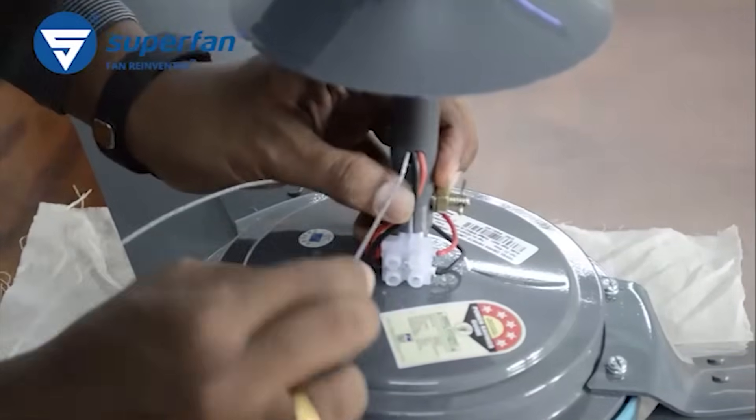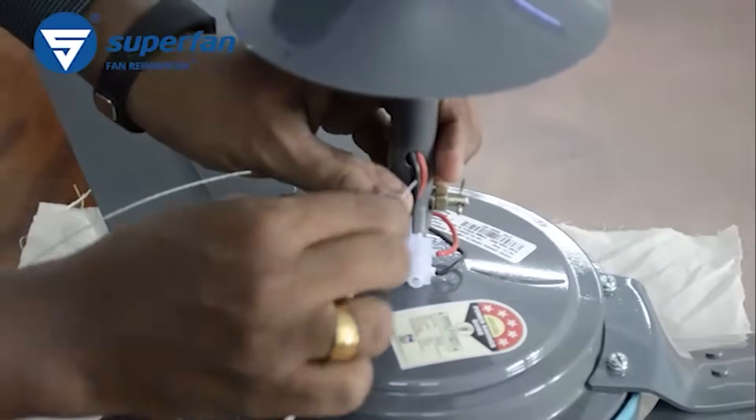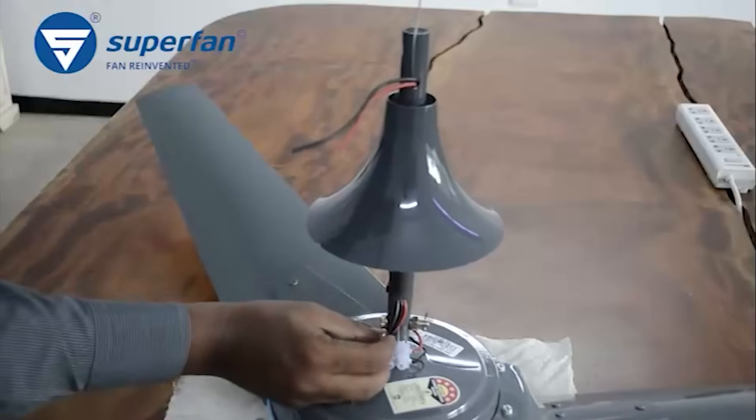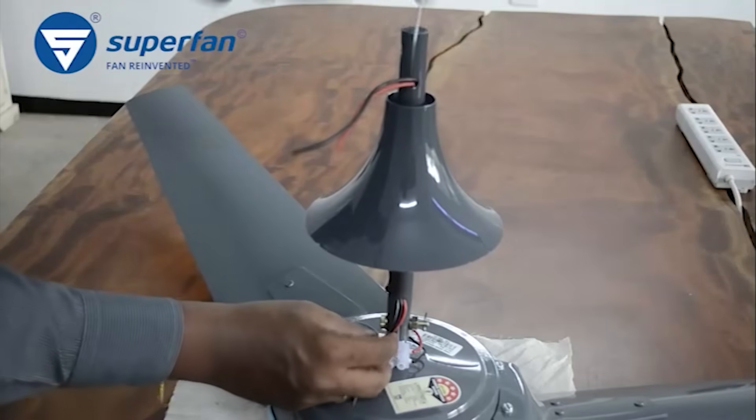Thread the unbeaded end of the safety rope through the hole at the bottom end of the down rod. Pull the safety rope through the opening at the top end of the down rod.